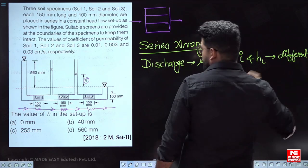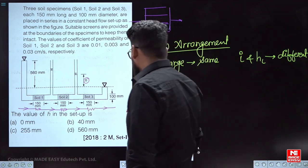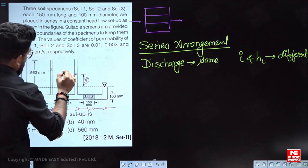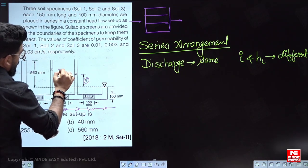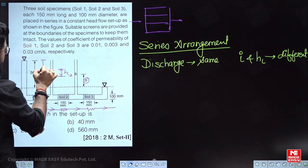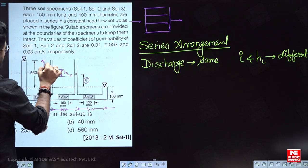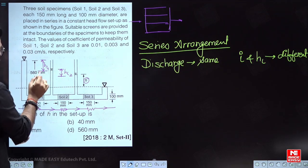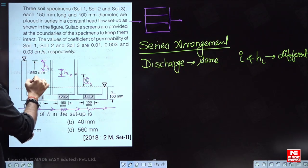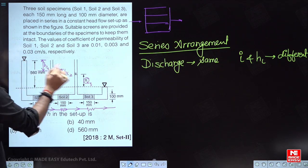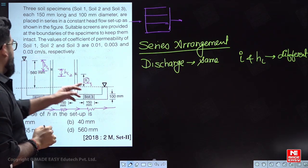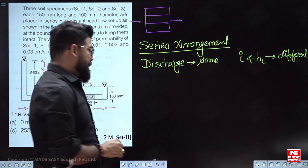The head loss in the third soil is HL3, head loss in the second soil is HL2, and head loss in the first soil is HL1. So HL1 plus HL2 plus HL3 equals the total head loss, which from entry to exit is 560mm.